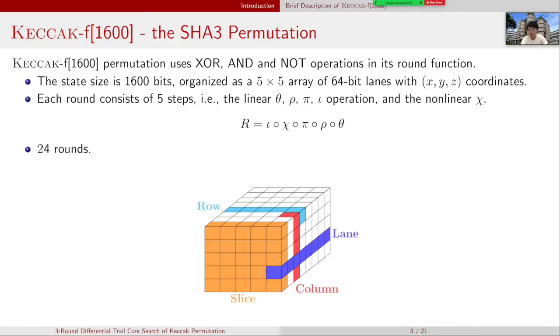Keccak Permutation uses XOR and NOT operation in its round function. The state size is 1600 bits, organized as a 5×5 array of 64-bit lanes with X, Y, Z coordinates. Each round consists of five steps, including four linear operations and a nonlinear chi operation. It consists of 24 rounds.